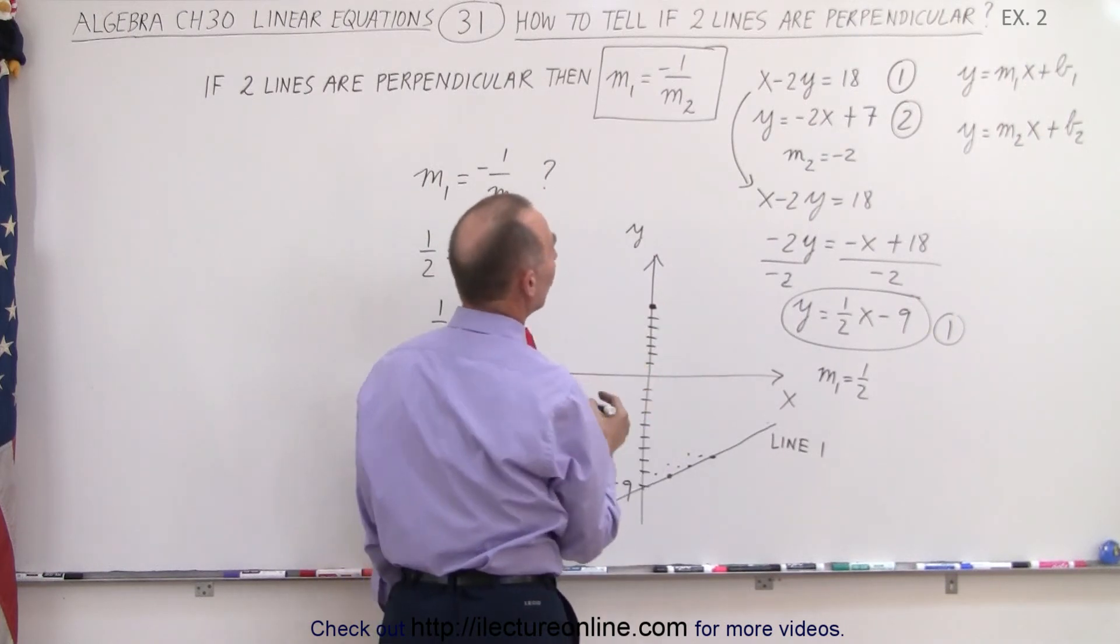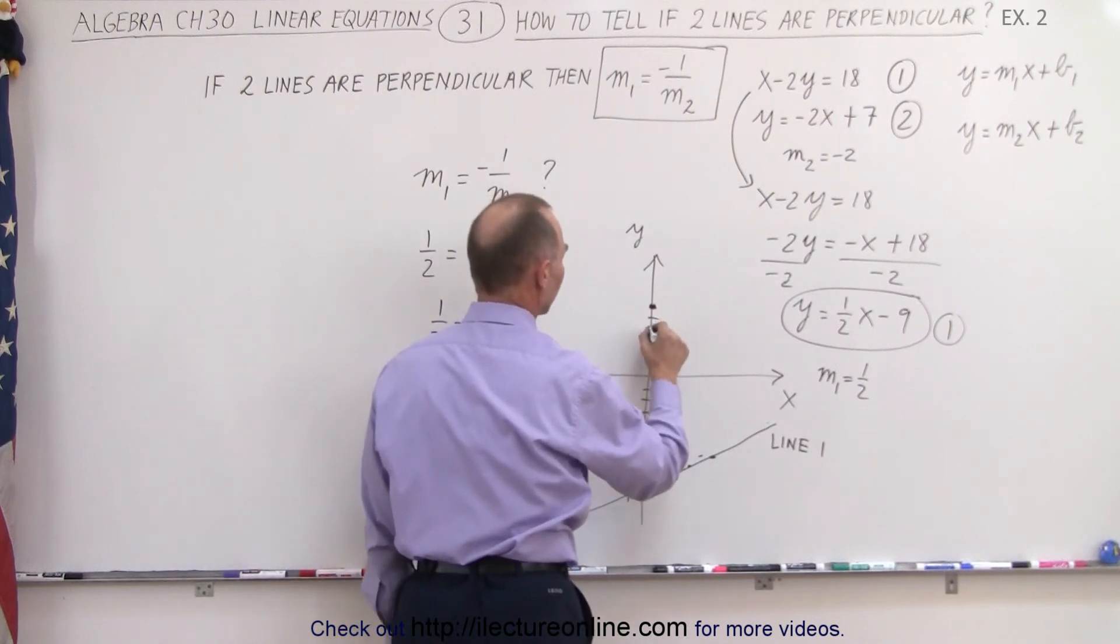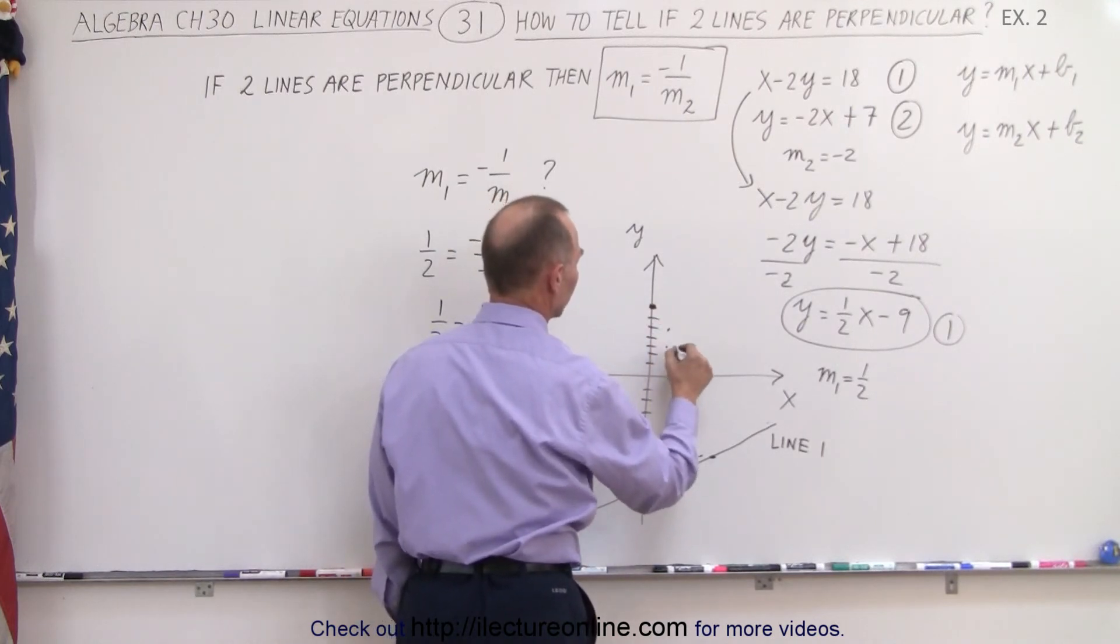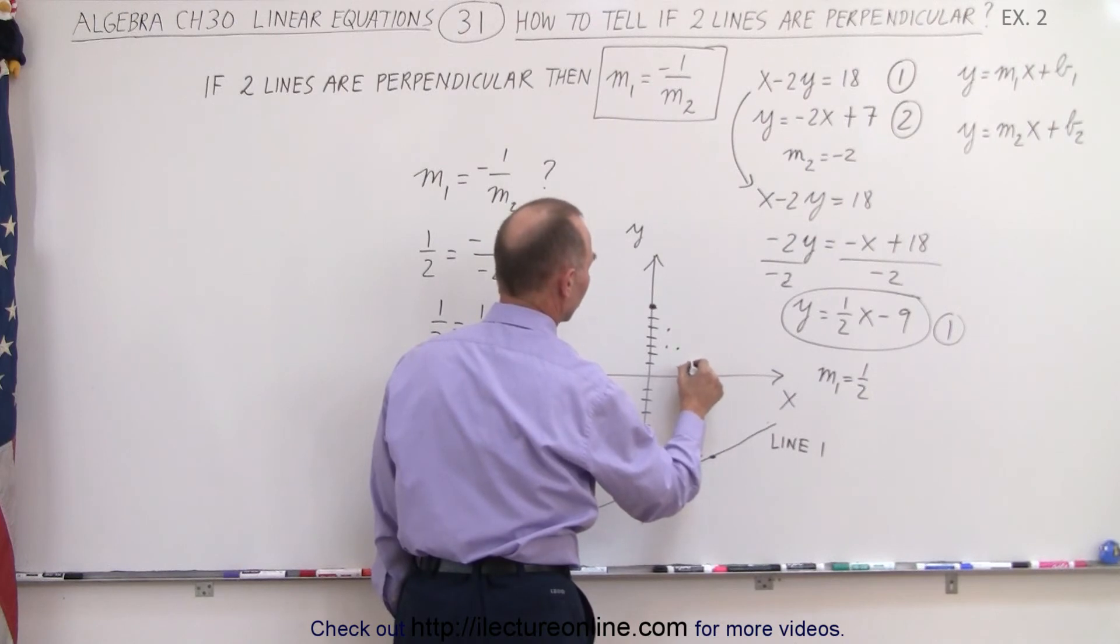and the slope is negative 2. That means down 2, over 1, down 2, over 1, down 2, over 1.